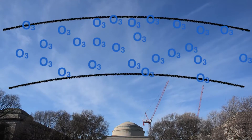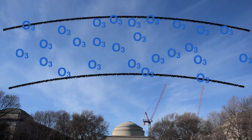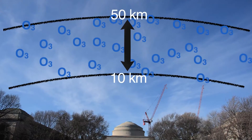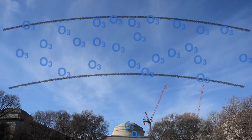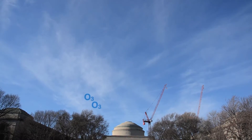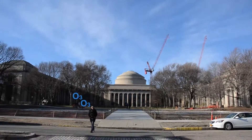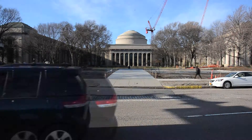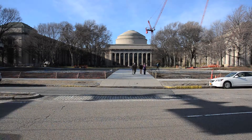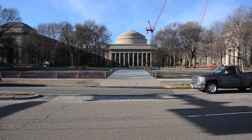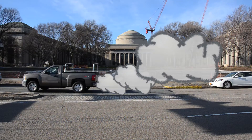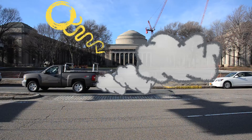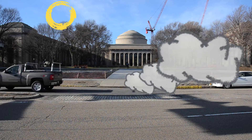Most ozone hangs out high above our heads between 10 and 50 kilometers off the ground. The rest — about 5 to 10 percent of it — is found near the surface where we live and breathe. Where does the surface ozone come from? Emissions from fossil fuel combustion provide the main ingredients for surface ozone formation, with energy from the Sun driving the process forward.